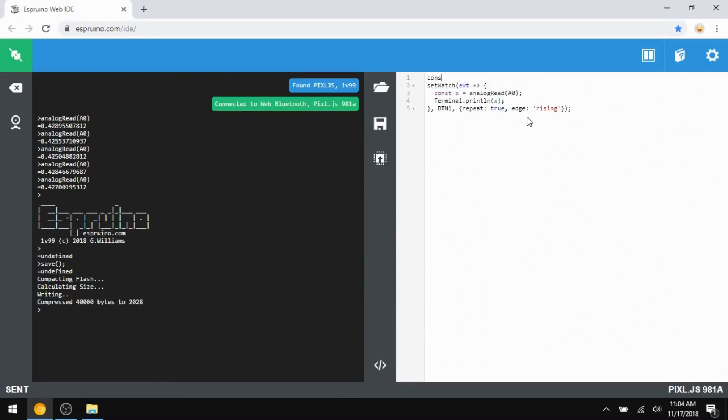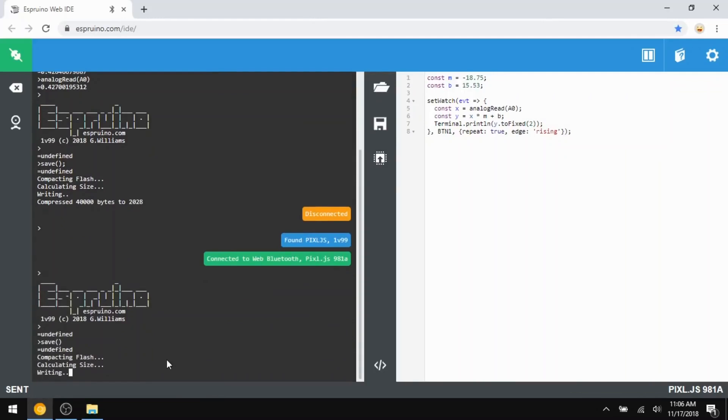So if we go back to our Espruino IDE, add that constant slope and the constant intercept, and then compute y based on those parameters, y will now be our calculated pH. I'll go ahead and chop off the number to two decimal places just so it's easier to read. Now I can send the code and then save the state.